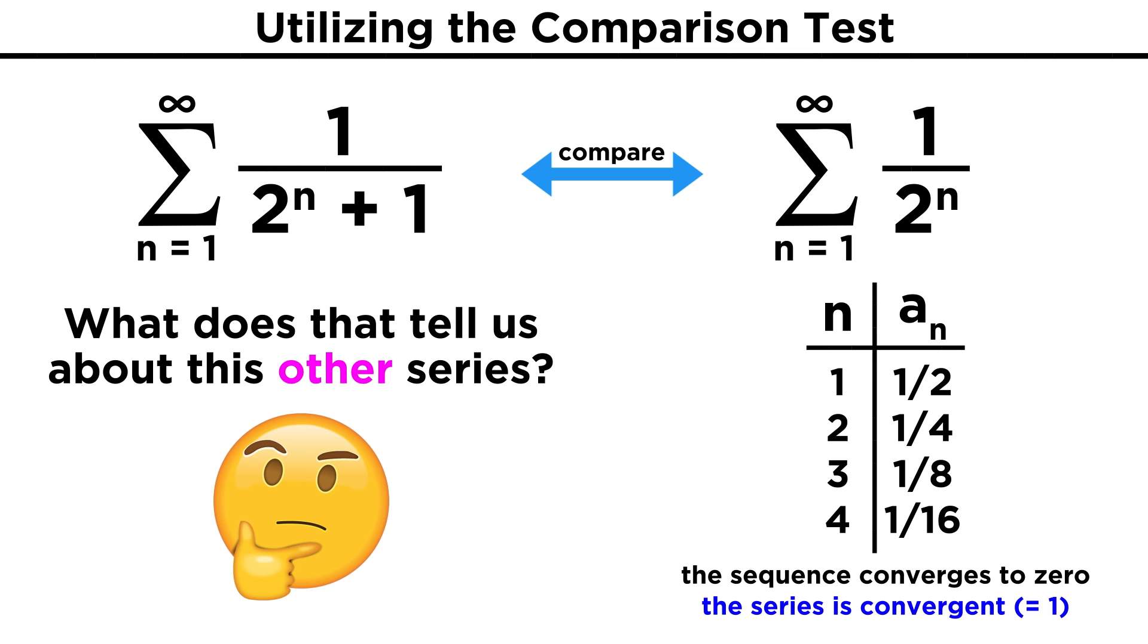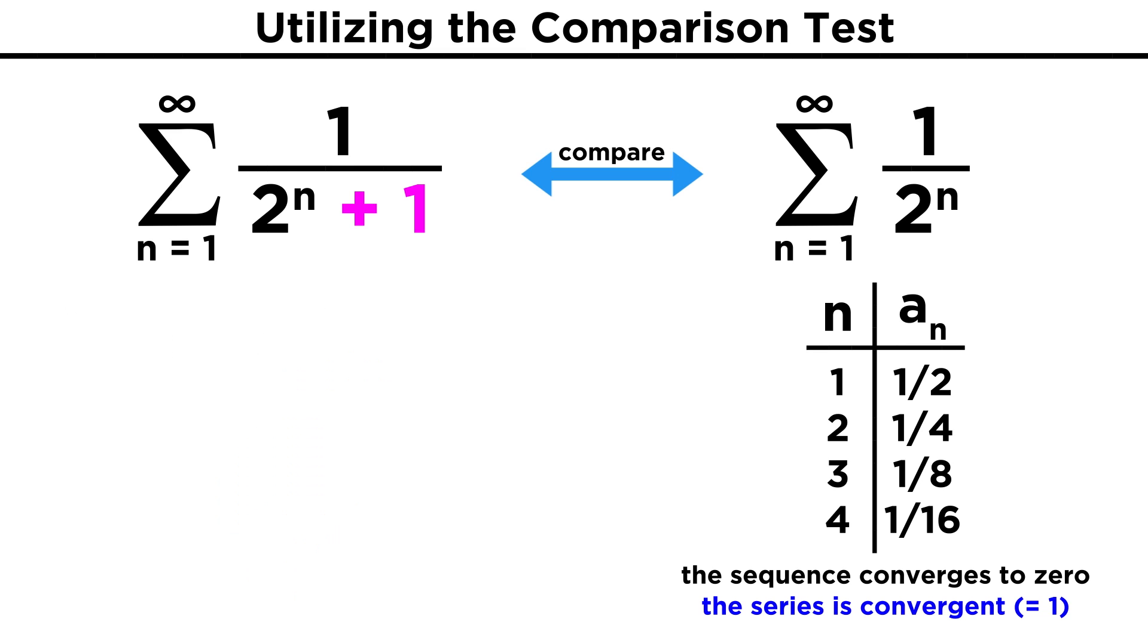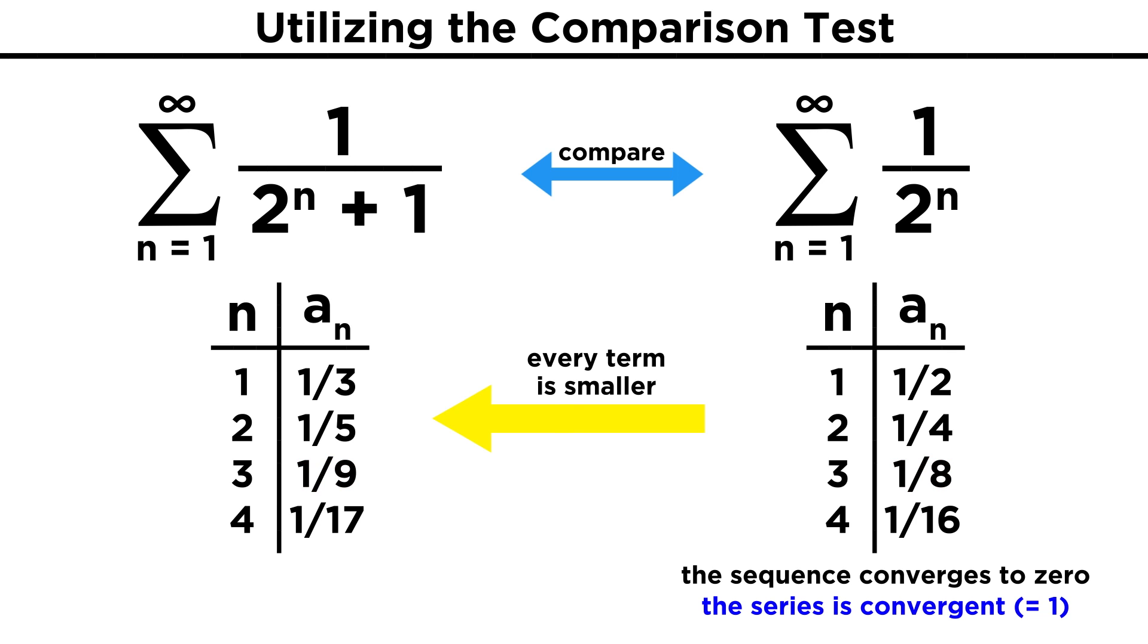If we know that this series converges, what can we say about the original one? Well, this plus one term in the denominator means that each term in this series must be smaller than each corresponding term in the other series, and if every term is smaller, then this series must also converge, and the sum of this series must also be less than one.